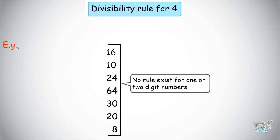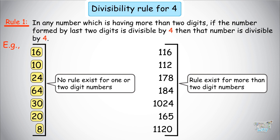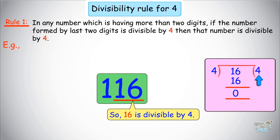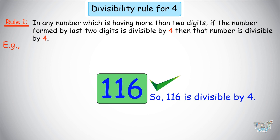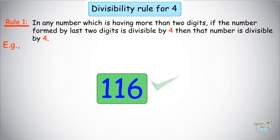You can only use the rule for numbers that have more than 2 digits. For numbers like 16, 10, 24, 64, 30, 20, and 8 — which have only 1 or 2 digits — you cannot find out if they are divisible by 4 using a rule; you will need actual division. But a rule does exist for numbers with more than 2 digits: if the number formed by the last 2 digits is divisible by 4, then the whole number is divisible by 4. For example, 116 — the last 2 digits form 16, and 16 divided by 4 equals 4, so 116 is divisible by 4. You can verify: 116 divided by 4 equals 29.